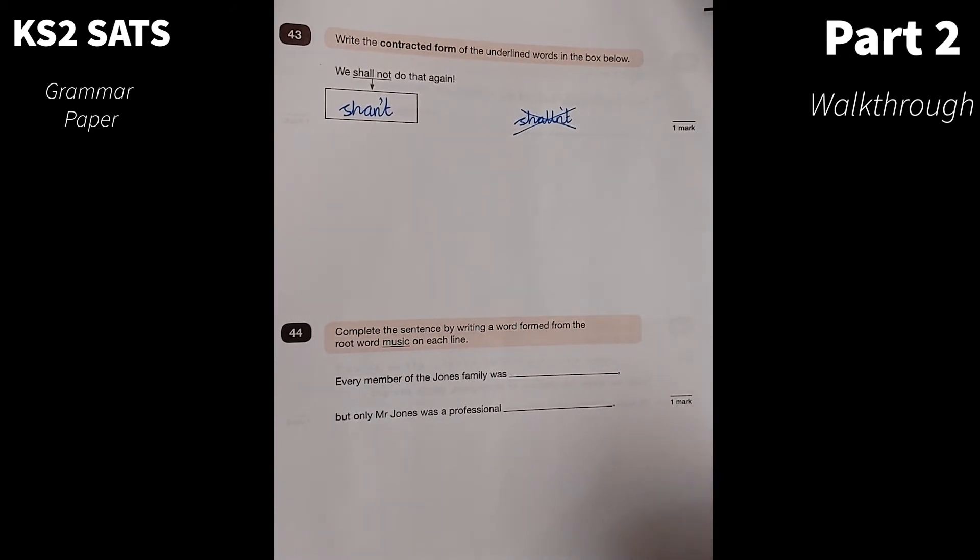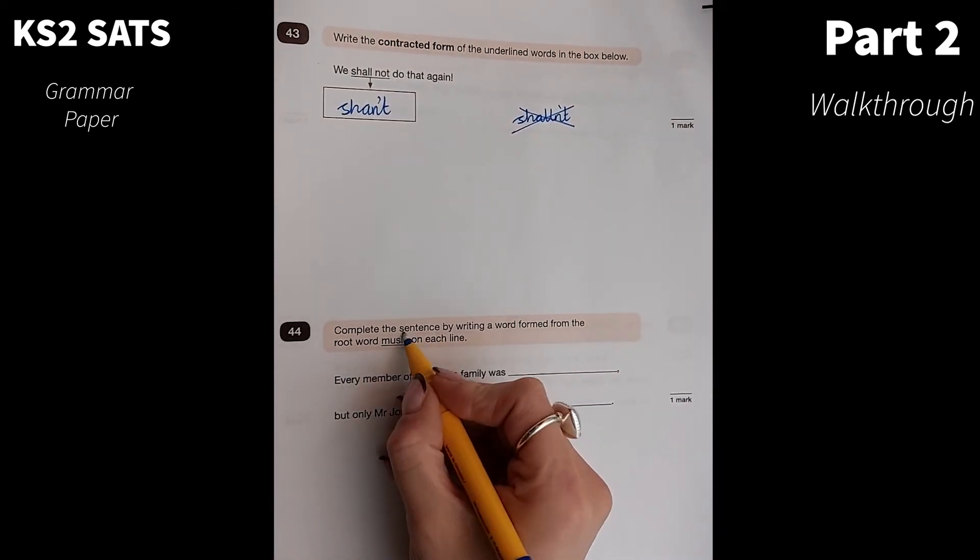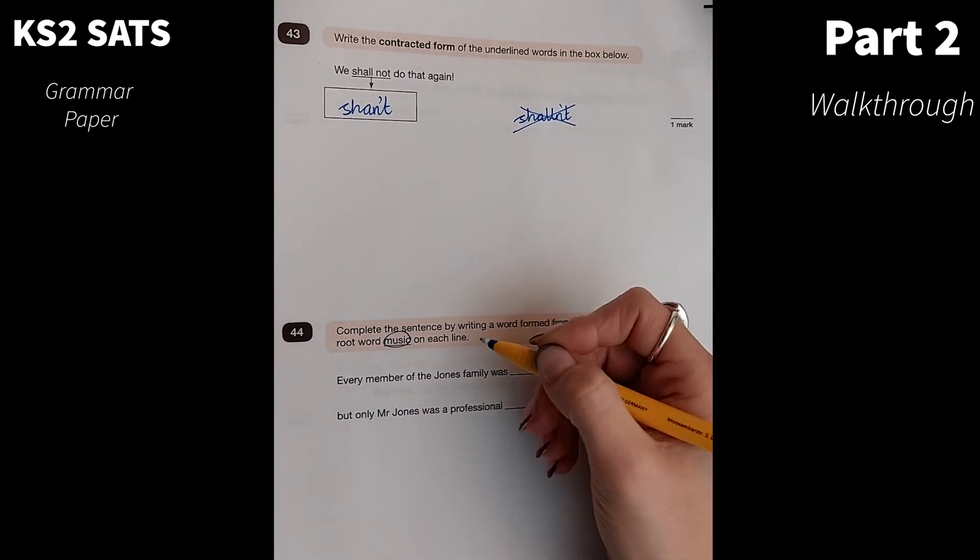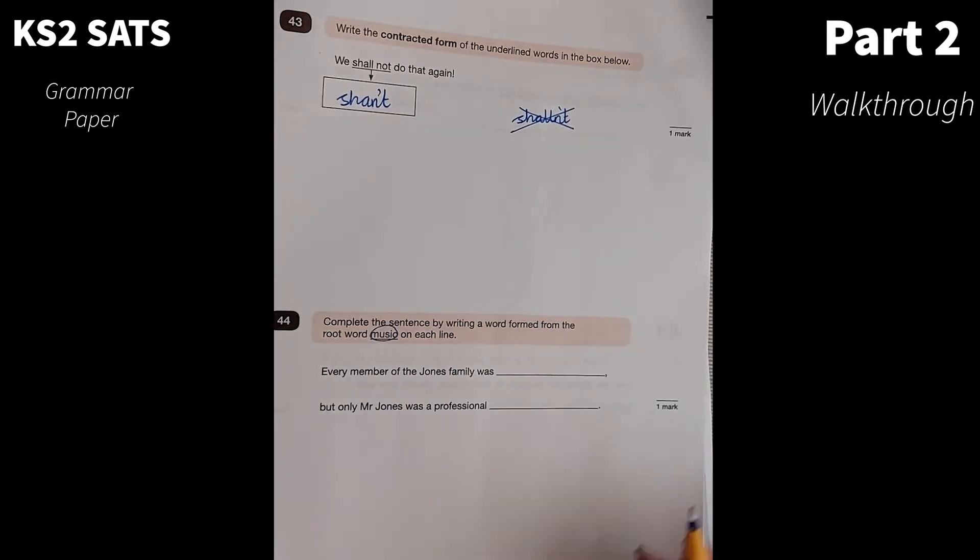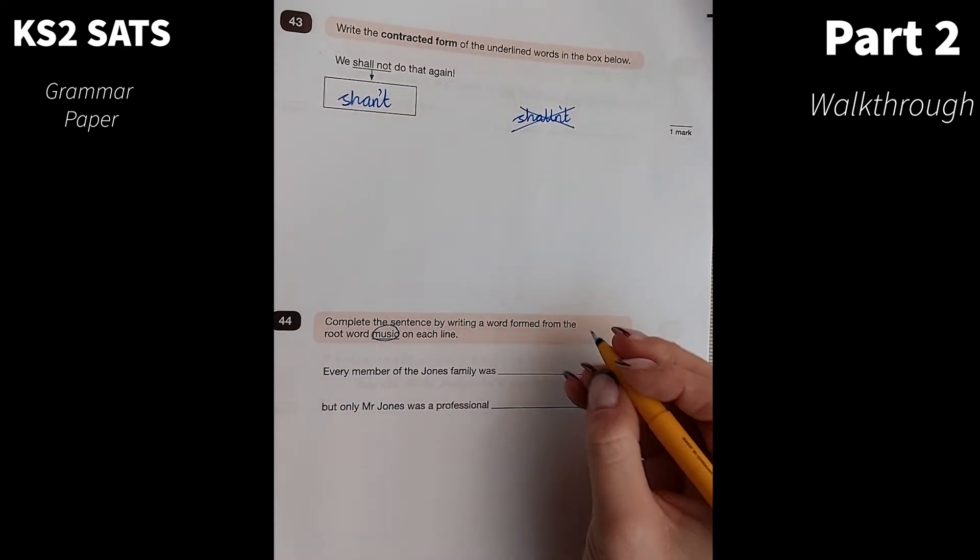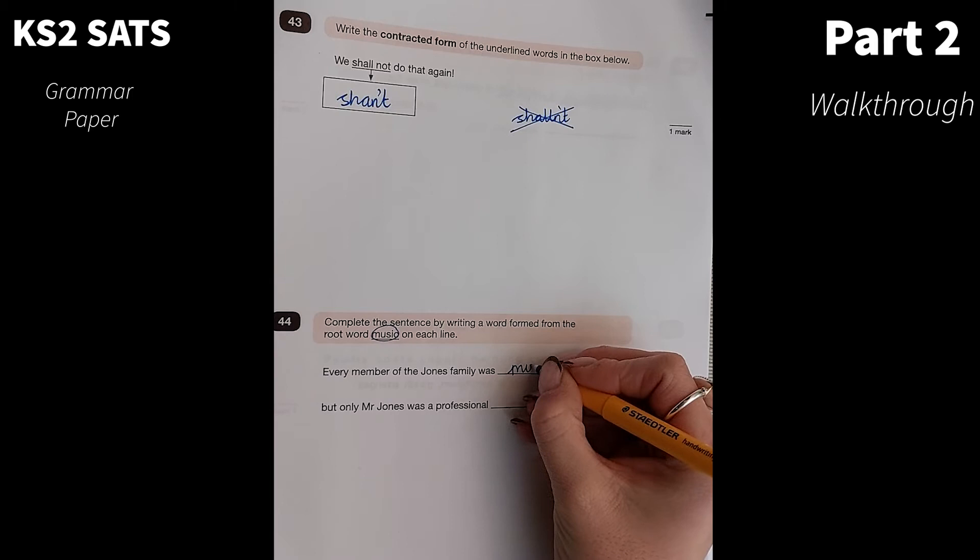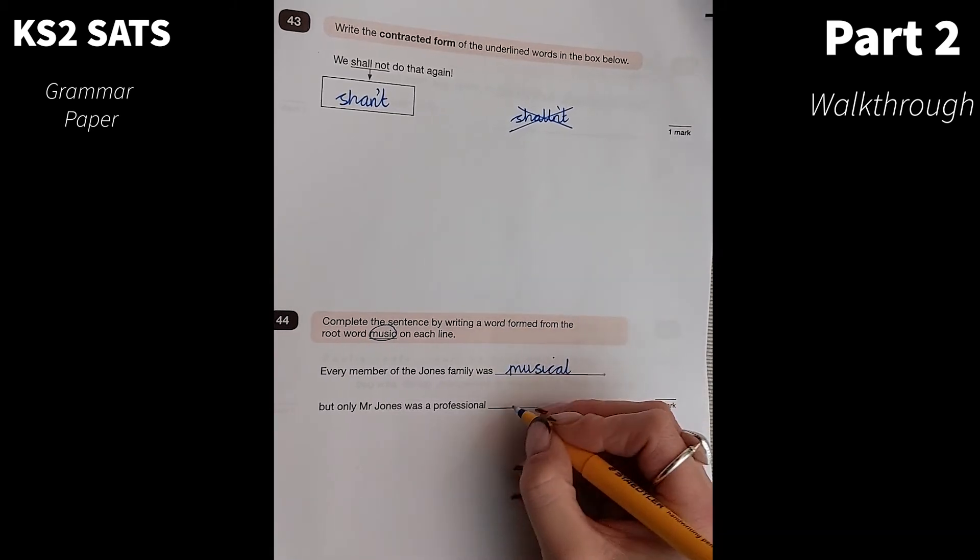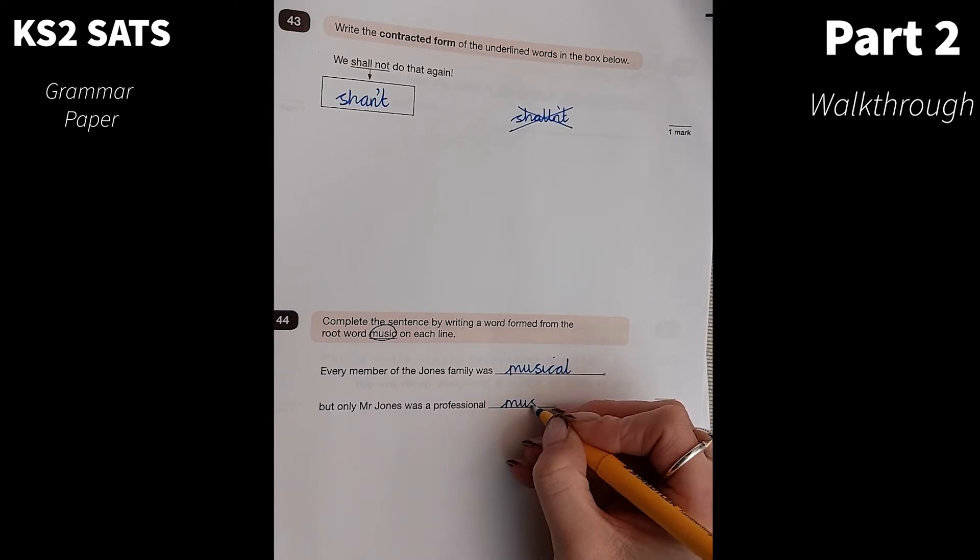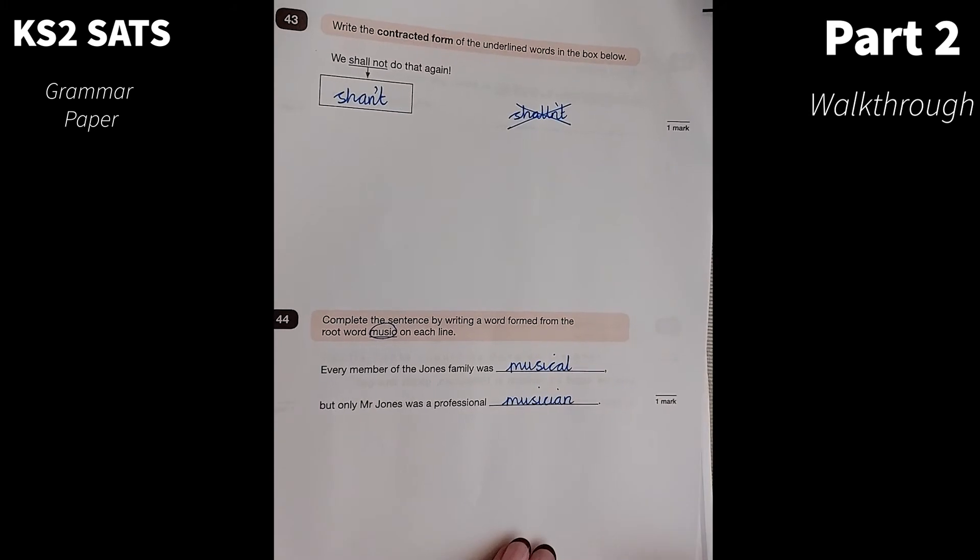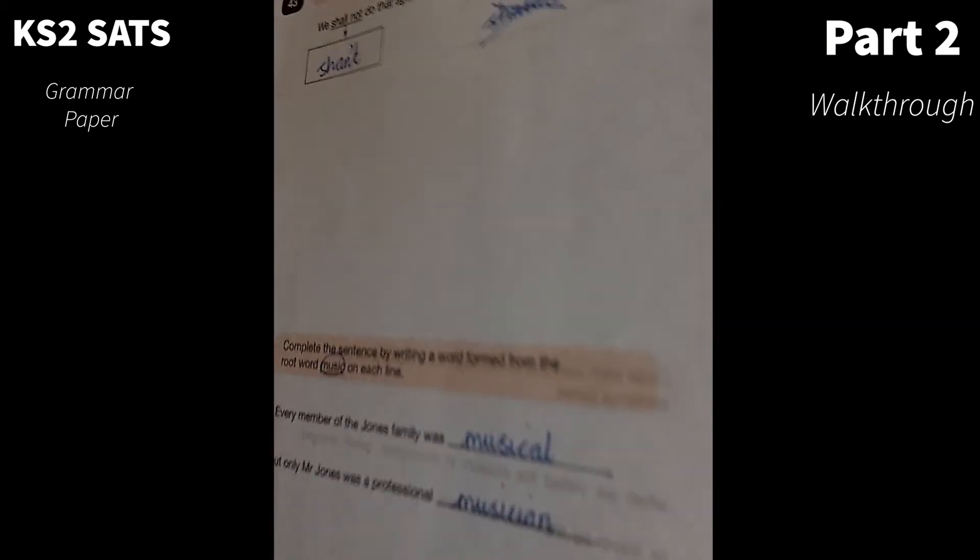Complete the sentence by writing a word formed from the root word music on each line. It's really important with these kinds of questions that you get the spelling correct. The children enjoyed the school musical. But only Mr. Jones was a professional musician. That's just testing the children's knowledge of root words.